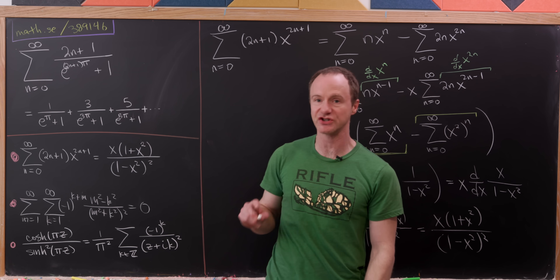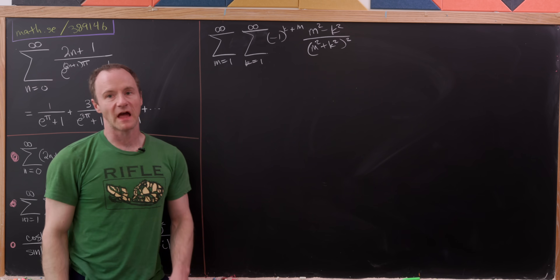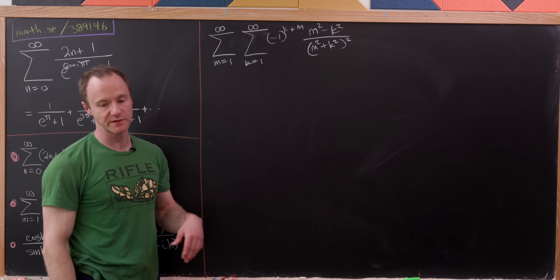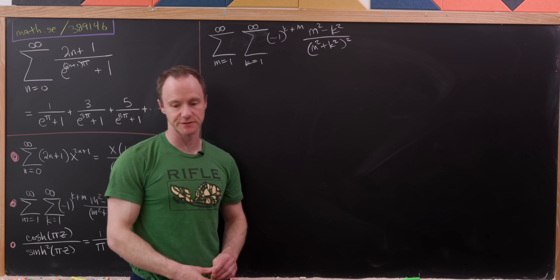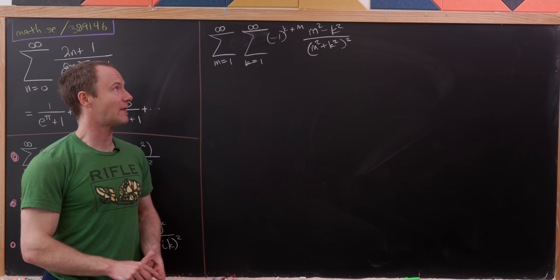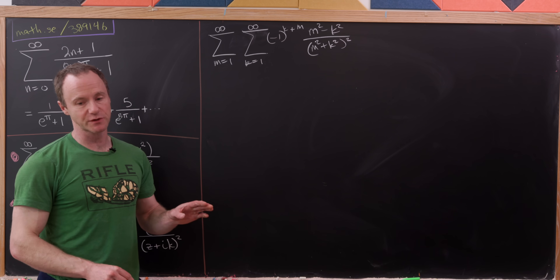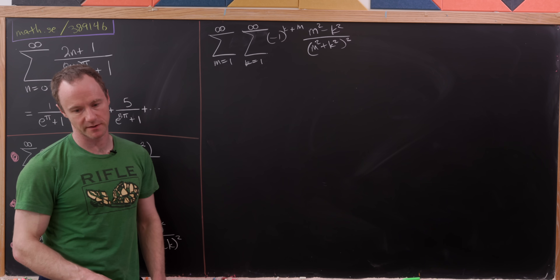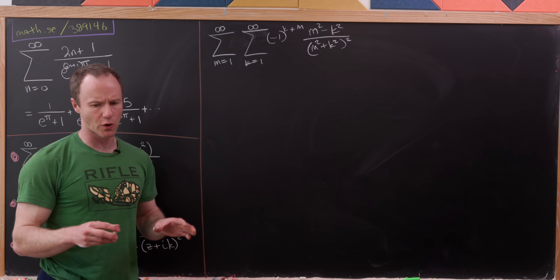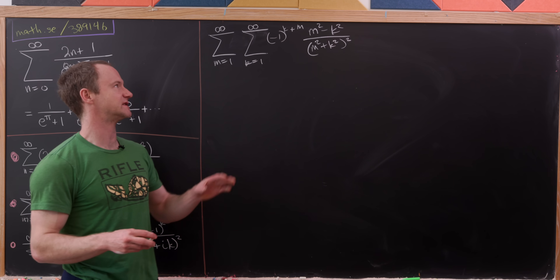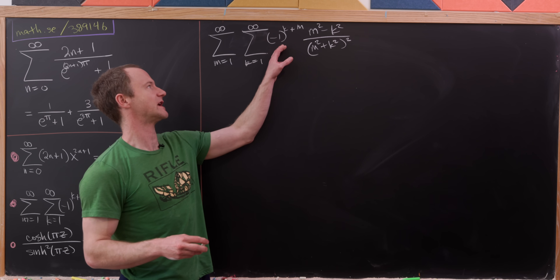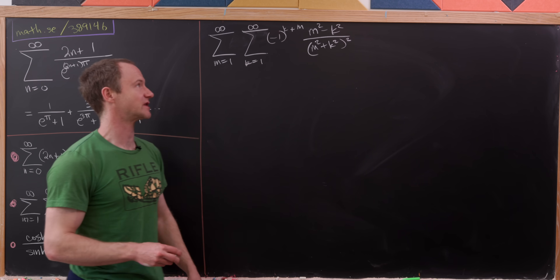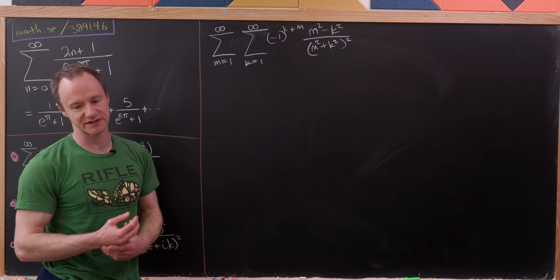Now let's move on to the second tool, which is a double sum. We've got the sum as m goes from 1 to infinity of the sum as k goes from 1 to infinity of (−1)^(k+m) times (m²−k²) over (m²+k²)². Notice there's quite a bit of symmetry built into this in the exponent of (−1) and in the denominator, and a bit of asymmetry in this m²−k² term — and we're going to take advantage of that.